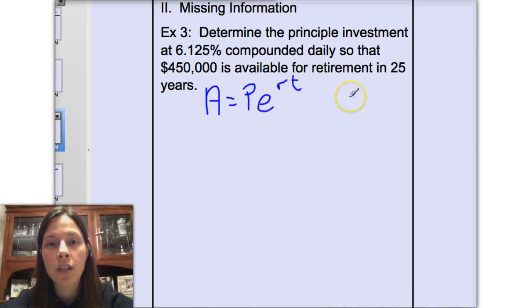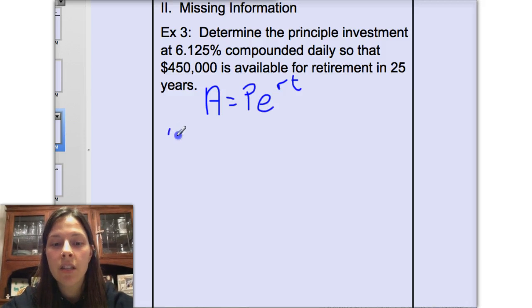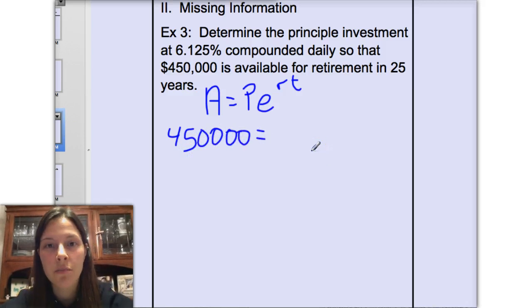So we're going to substitute the information we know and solve for what we don't. We want to have $450,000 available for retirement. Remember, we don't know how long we're going to live after we retire, so it's nice to have a substantial amount of money left to live off of.